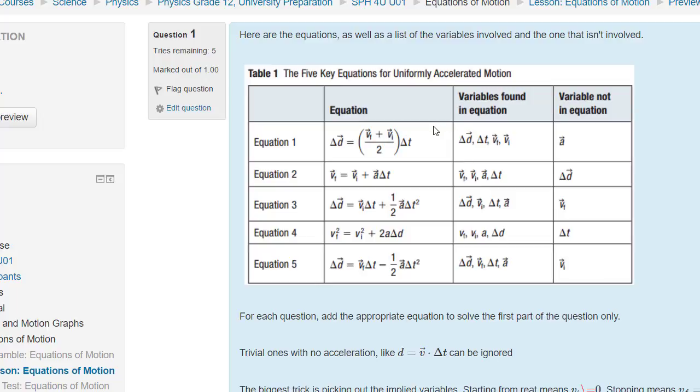...that each one is set up to include four of these variables, and some people were saying, well, what's vf and vi? Well, vf is the final velocity, vi is the initial velocity, and it's the same as v2 and v1. Each one has a variable that is not included in the equation.